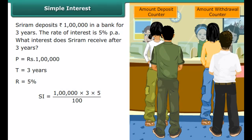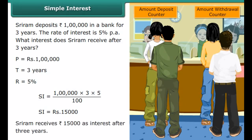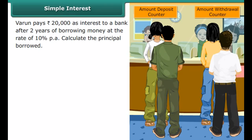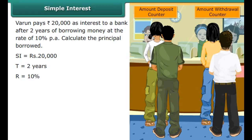Next example: calculating the principal. Varun pays Rs. 20,000 as interest to a bank after 2 years of borrowing money at the rate of 10% per annum. Here interest is Rs. 20,000, time period is 2 years, rate of interest is 10%. Substituting in the formula: 20,000 equals P into 2 into 10 upon 100. Calculating gives principal as Rs. 1,00,000. Varun borrowed Rs. 1,00,000 for a period of 2 years.